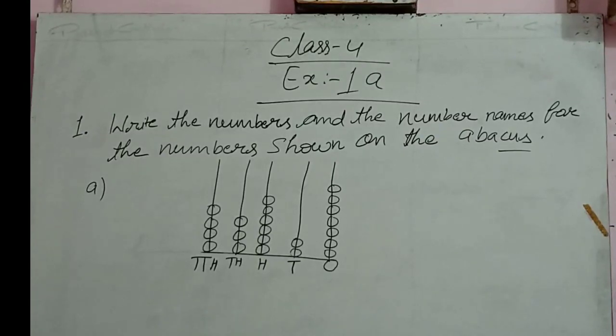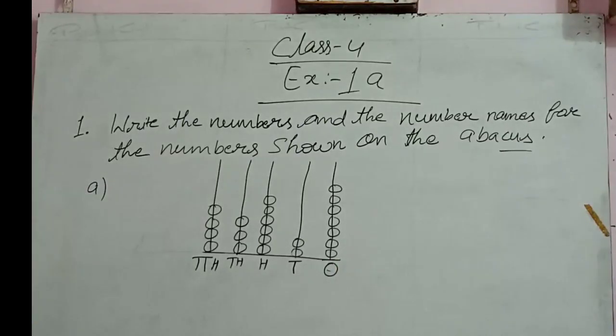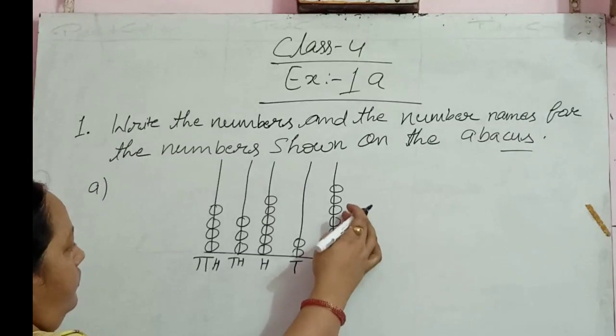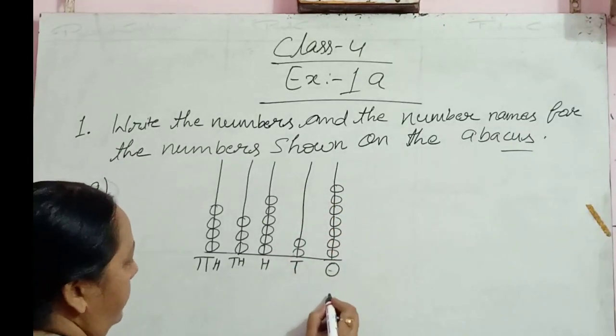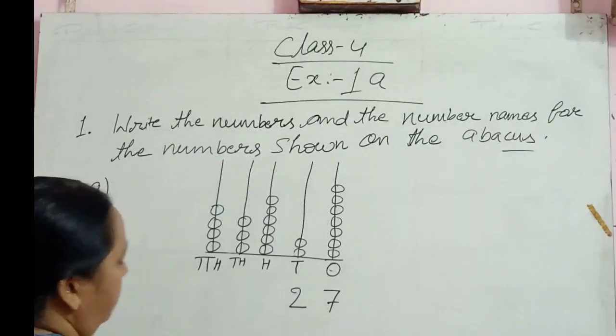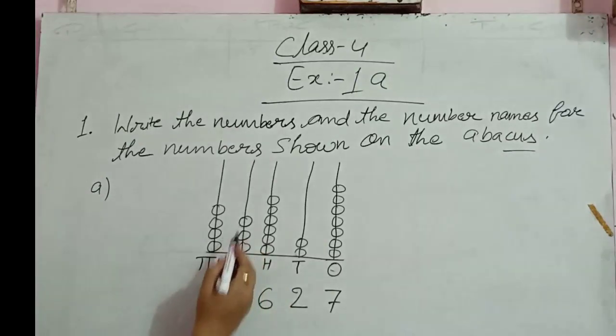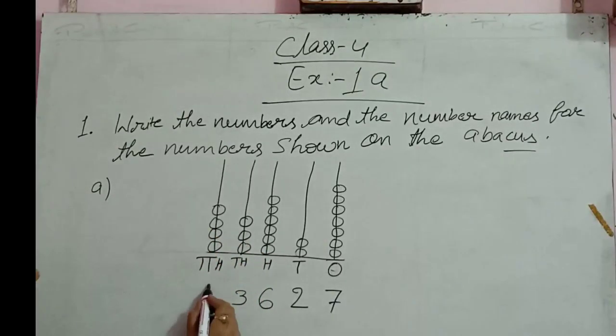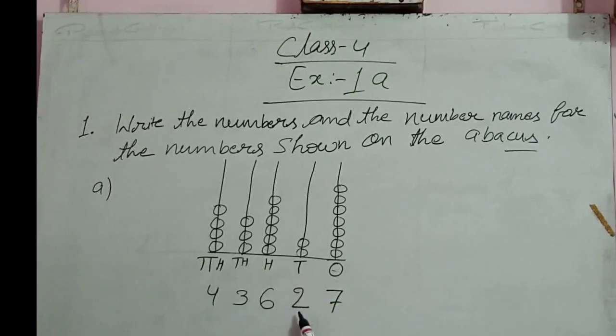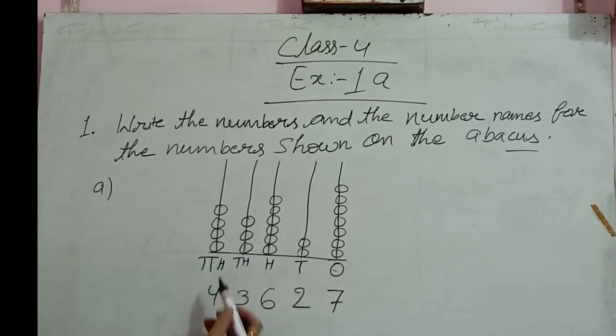According to the pearls, we decide how many digits are given. Here 1, 2, 3, 4, 5, 6, 7 - seven pearls are there, so we write 7. Here 2 pearls, we write 2. Here 6 pearls, we write 6 in the hundreds place. And we write 3 in thousands, 4 in ten thousands. That is 7 in the ones place, 2 in the tens place, 6 in the hundreds place, 3 in the thousands place, and 4 in the ten thousands place.